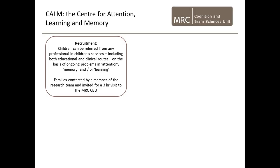How does recruitment work? The children can be referred by any professional working in children's services, including both educational and clinical routes. They're referred in a very generic way on the basis of ongoing problems in attention, memory, and/or learning — it's an intentionally broad catch. Pretty much any child who has fallen behind in cognitive terms can be referred. The exclusion criteria are very minimal: if they have a known or diagnosed genetic condition, or a known sensory problem such as blindness, that is an exclusion criterion. But anything which we think firmly is a cognitive problem in childhood can be referred.